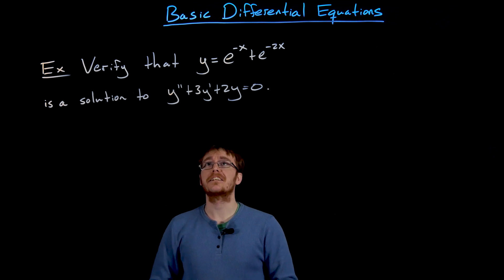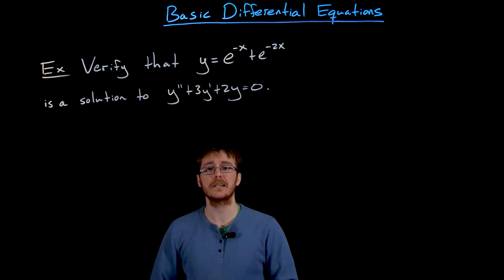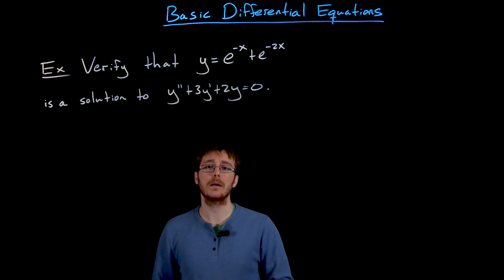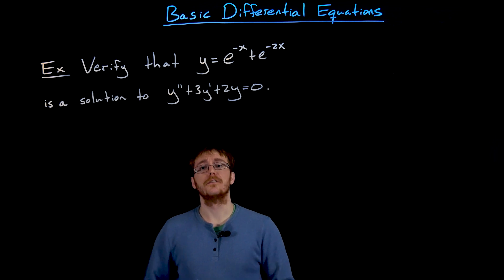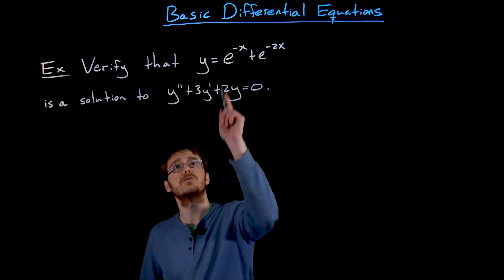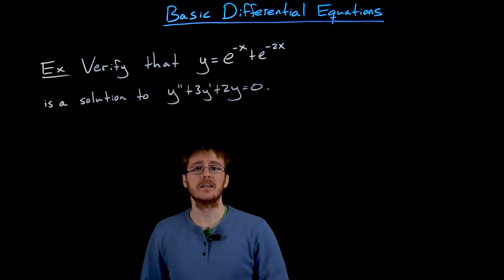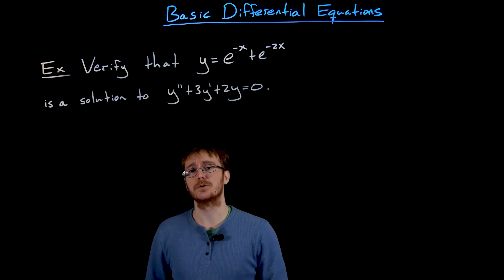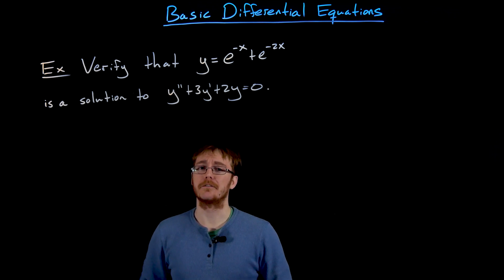In this example we are asked to verify that the function y equals e to the negative x plus e to the negative 3x is a solution to the second-order differential equation y double prime plus 3y prime plus 2y equals zero. To verify, we have to plug the function y, its first derivative y prime, and its second derivative y double prime into this equation, simplify, and see that we get a true statement. The left-hand side should simplify and everything should cancel out to give us zero.